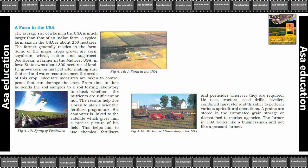Joe Horan, a farmer in the Midwest USA in Iowa state, owns about 300 hectares of land. He grows corn on his fields, after making sure that soil and water resources meet the needs of his crop. Adequate measures are taken to control pests that can damage the crop.